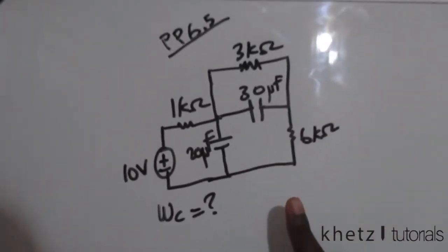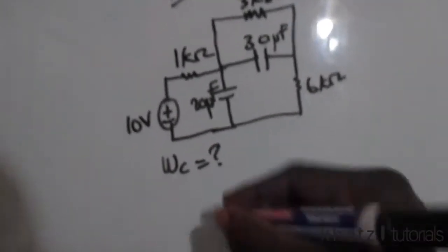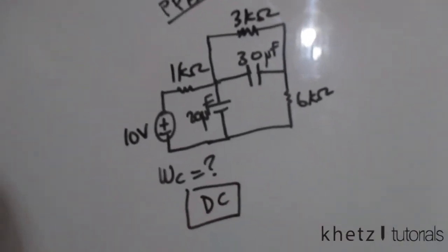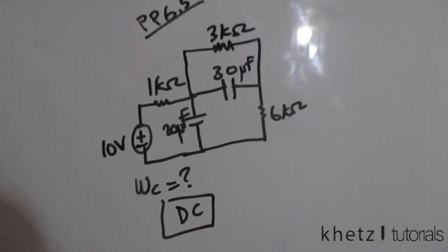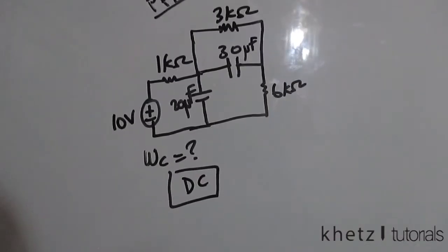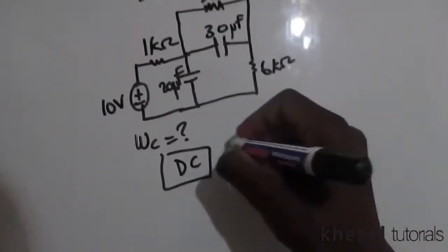This is given to us under DC conditions, and under DC conditions capacitors become open circuits. So this will be the resulting circuit.